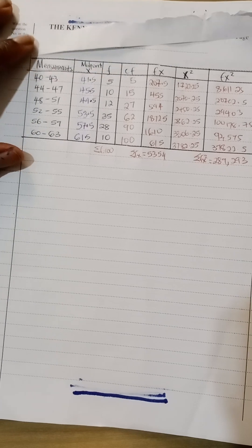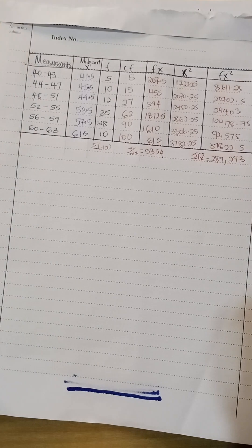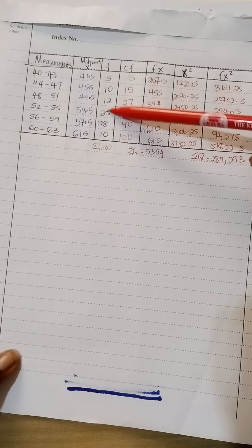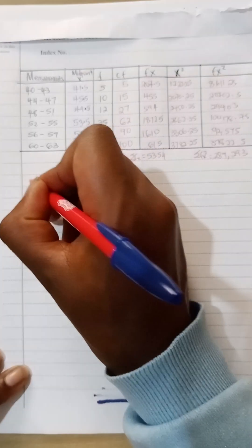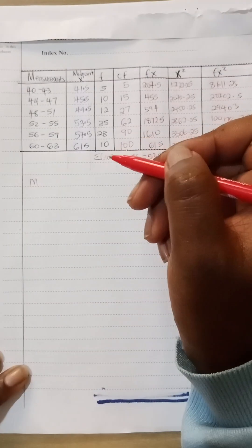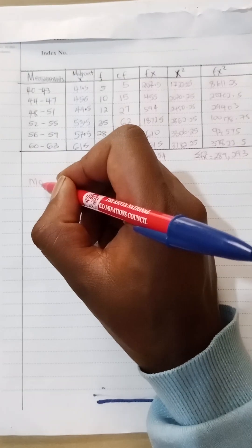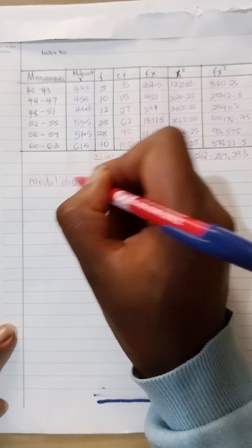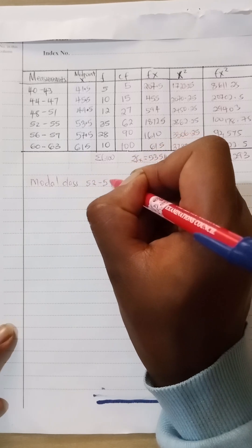So now the modal class, you basically look at the frequency, the one with the highest is 35. So the modal class is between 52 to 55. So the modal class here is 52 to 55.